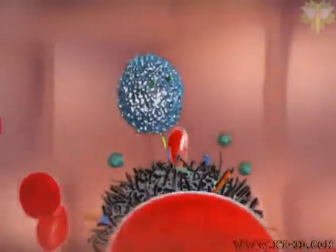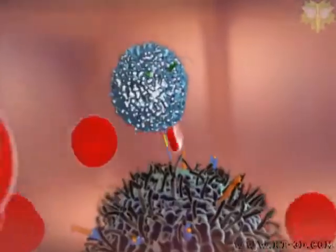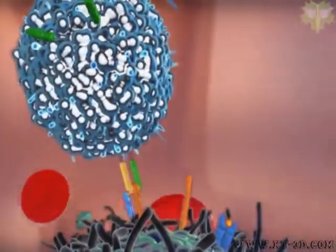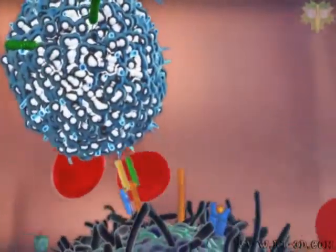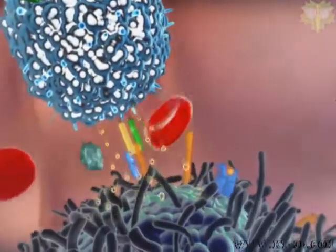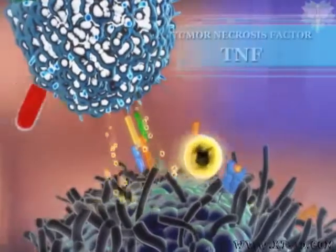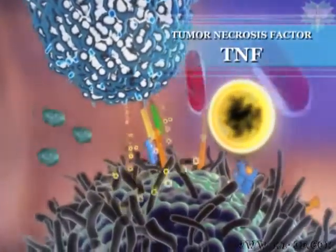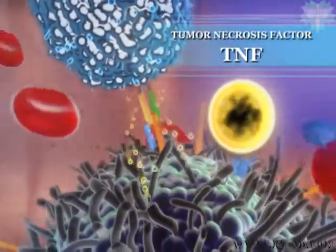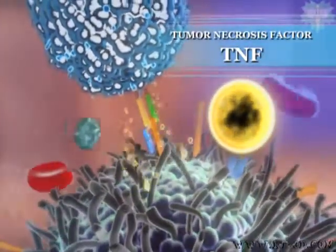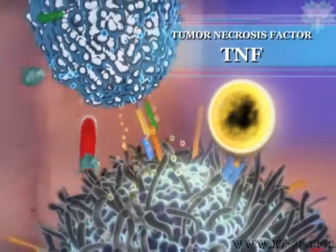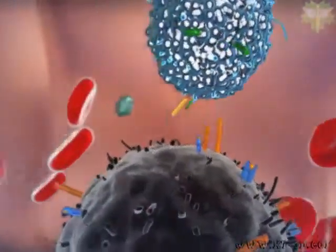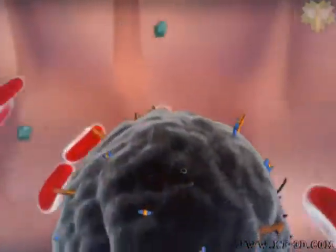There are basically two types of destruction that take place. One is the release of cytotoxic molecules, such as tumor necrosis factor, also known as TNF, that are released from natural killer cell granule membranes and cause destruction of the cancer cell's surface membranes.